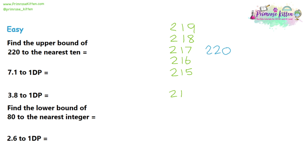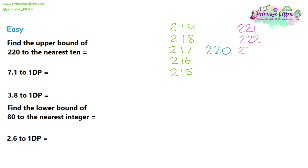But when we get to 214, that would actually round down to 210. So 214 is too small — it's not going to round up. So we've found all our whole numbers that would round up to 220. Next we're going to look at numbers that will round down to 220. So 221, 222, 223, and 224 would all round down to 220. But when we get to 225, that would actually round up to 230, so 225 is not going to round to 220.